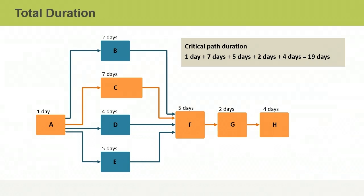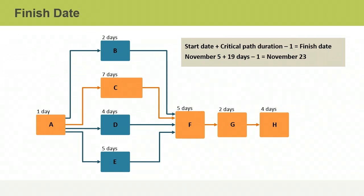Using a network diagram with all your project's activities and duration estimates, you can schedule the project. Based on the durations, you can calculate the project's total duration. This project can finish in no less than 19 days. You add the project's duration to a given start date to arrive at a finish date. You will also need to subtract one day if the first day is a working day.